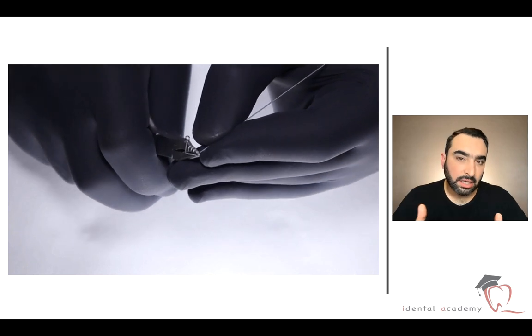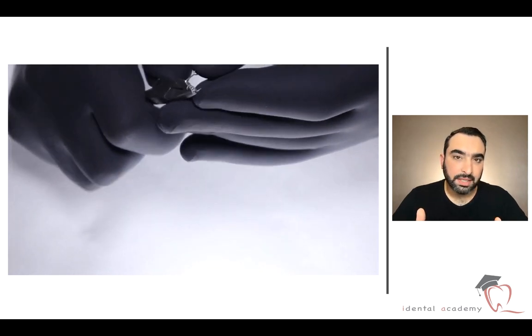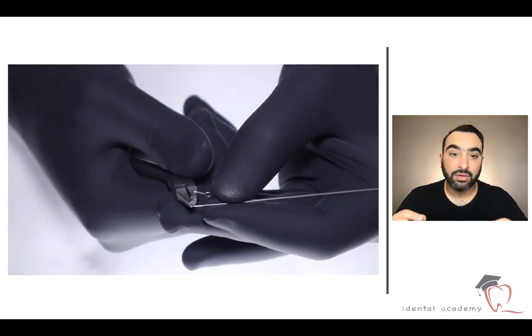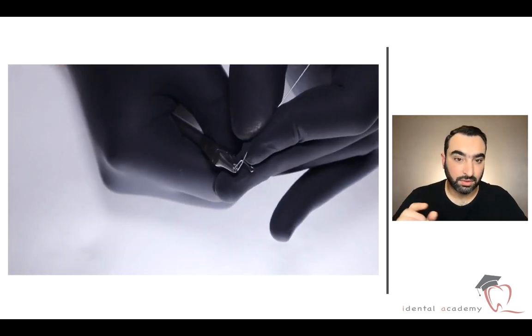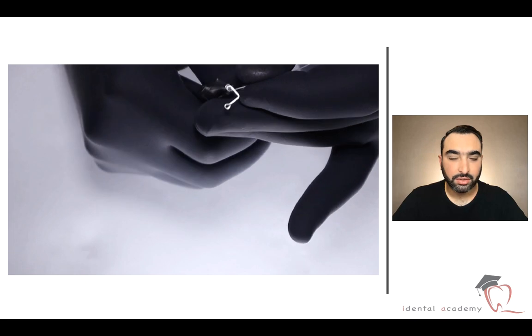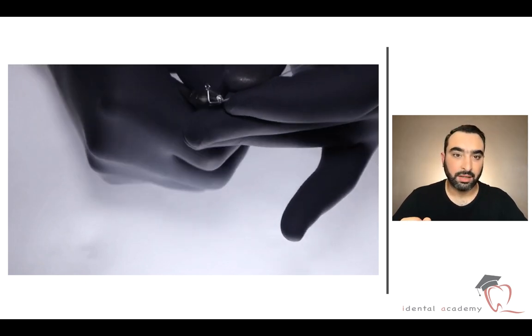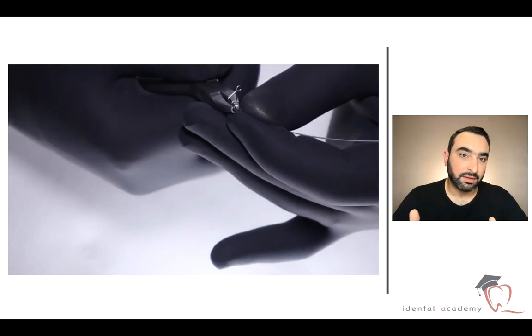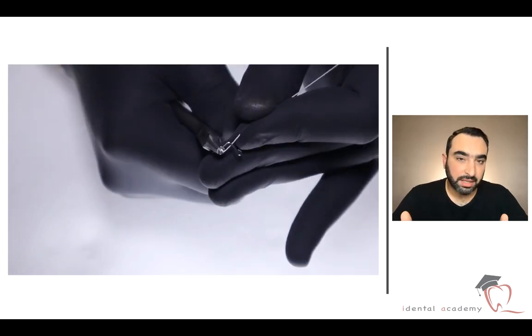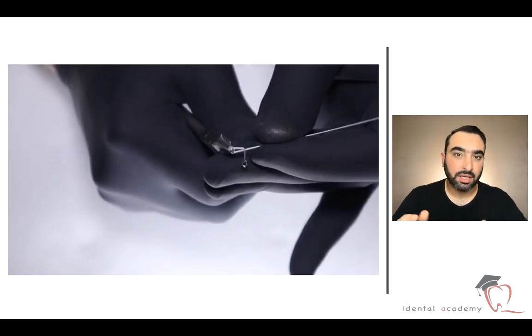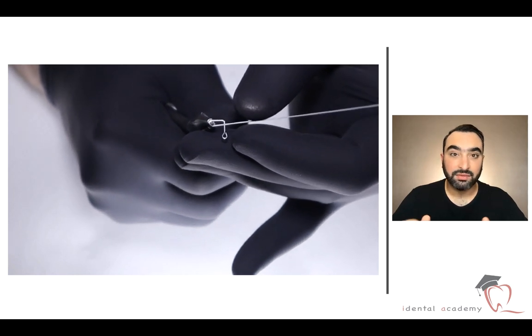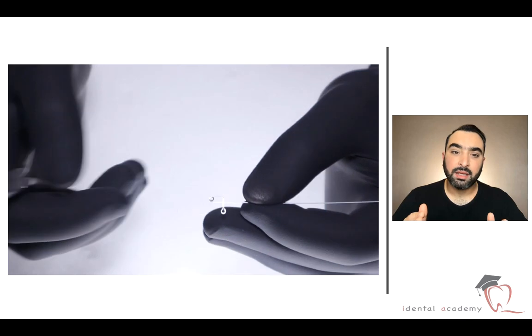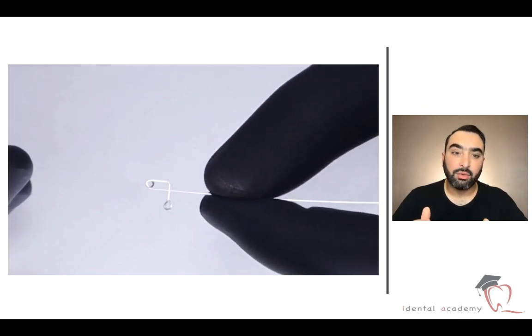The length must be six millimeters, but you have to increase it if you have long canine. So if you study your case very well you will know how to make the loop very well. And if the canines are less than the usual length, you can make it shorter, especially if you have a special need for your patient.